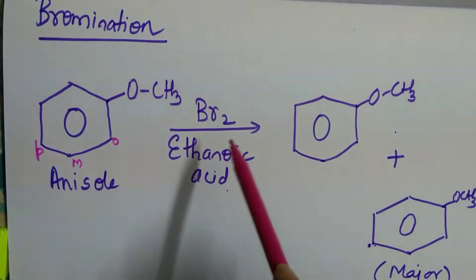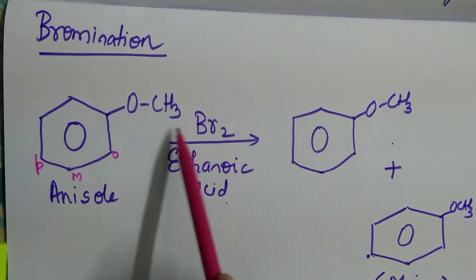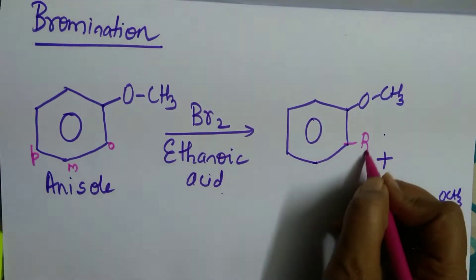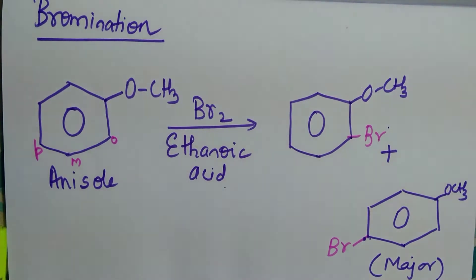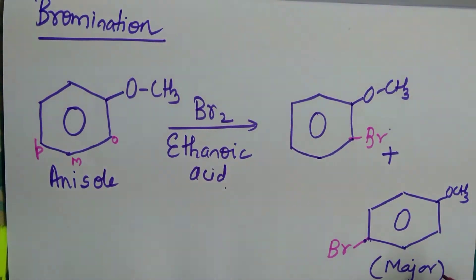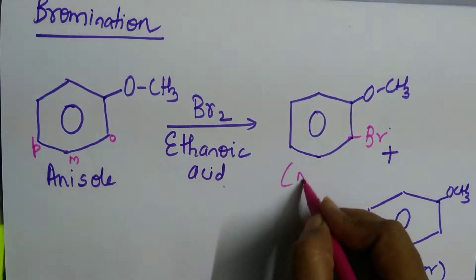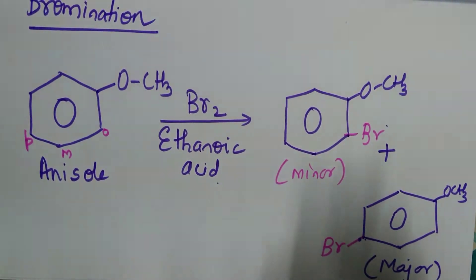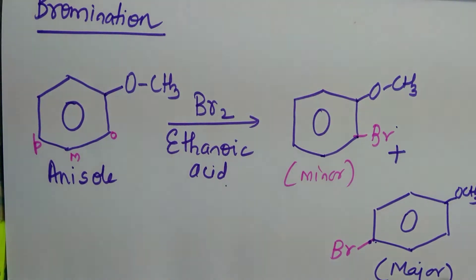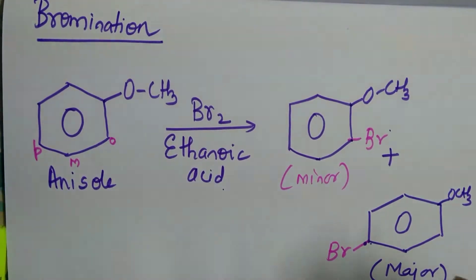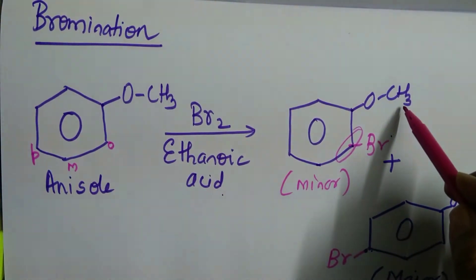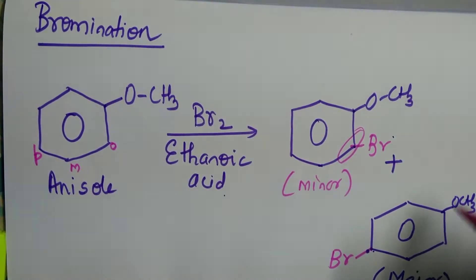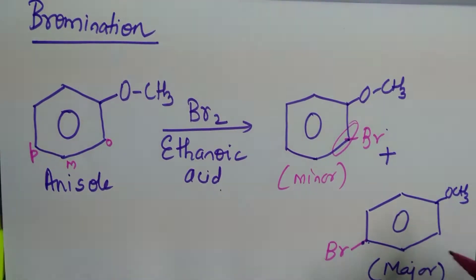When we go for bromination of anisole - this is the common name of methoxybenzene - it gives you ortho-bromoanisole and para-bromoanisole. Ortho-bromoanisole is obtained in minor concentration or as a minor product. This comes as a major product. Can you tell me why? It is because this ortho position is very near to the functional group. Therefore, steric hindrance will be there. Therefore, your bromine electrophile attacks para position very easily.